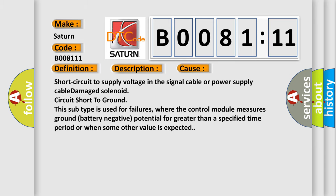Short circuit to supply voltage in the signal cable or power supply cable damage solenoid, circuit short to ground. This subtype is used for failures where the control module measures ground battery negative potential for greater than a specified time period or when some other value is expected.